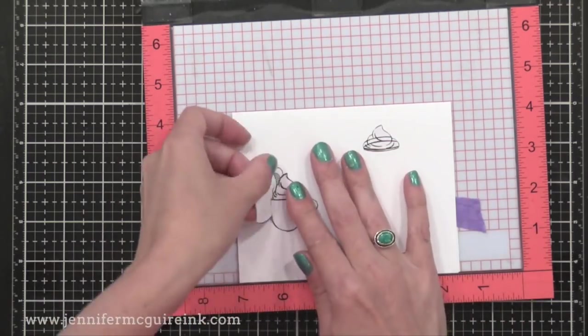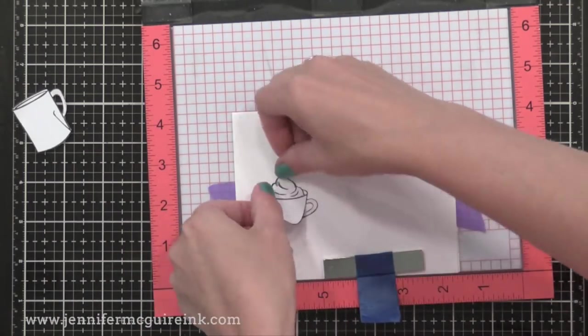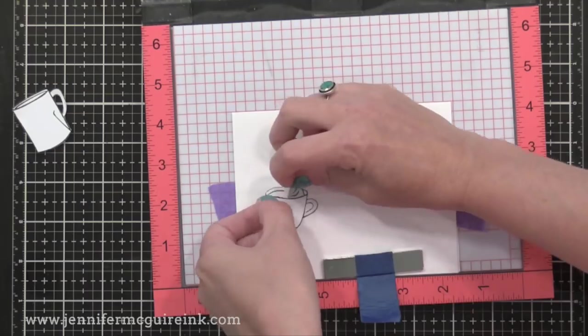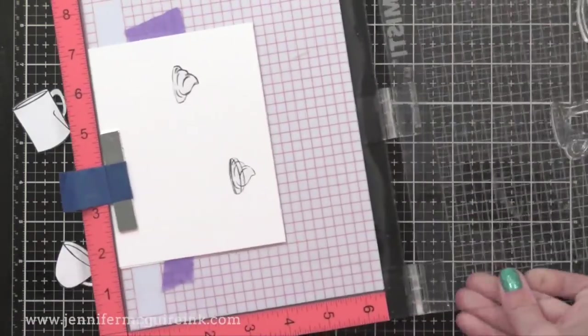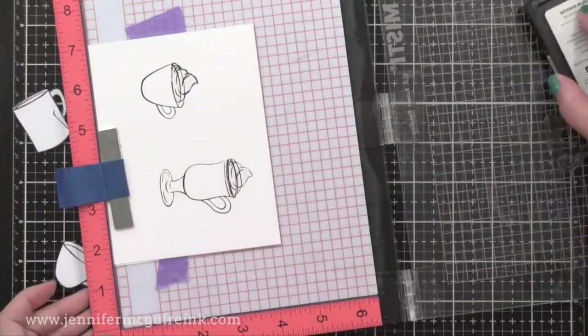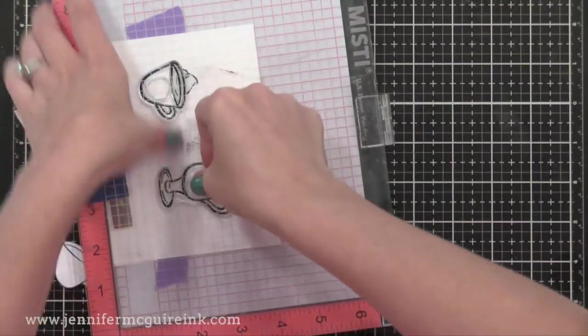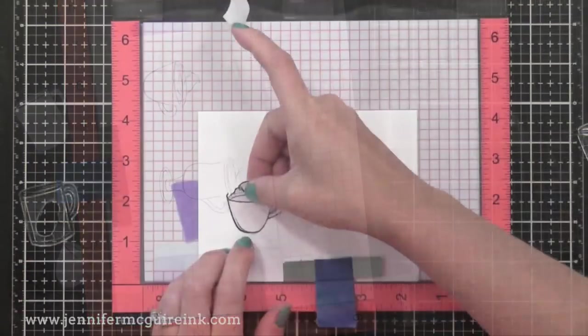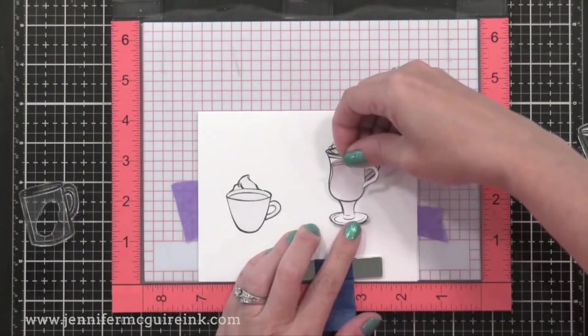Now I do find that this Avery label that I'm using for masks is great for sticking down and removing multiple times. So these masks will last you a while. So now I'm stamping these two cups with black ink. When I do masking, I like to double stamp just to make sure the ink gets right up against the edge of the mask.